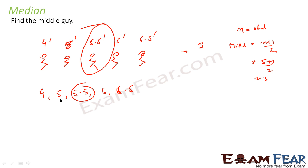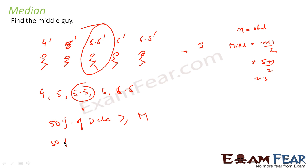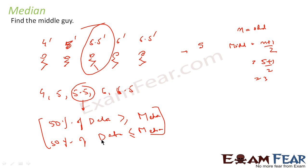This is also called central tendency. We have three kinds of central tendency, and median is one of them. The median is the middle value. From the median, I can tell that 50% of the data is less than or equal to 5.5, and 50% of the data is greater than or equal to 5.5. In general, 50% of data is less than or equal to the median, and 50% of data is greater than or equal to the median.